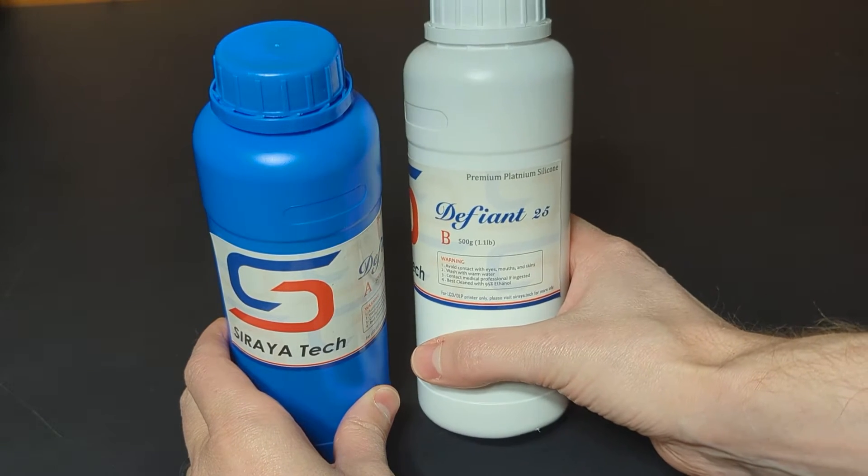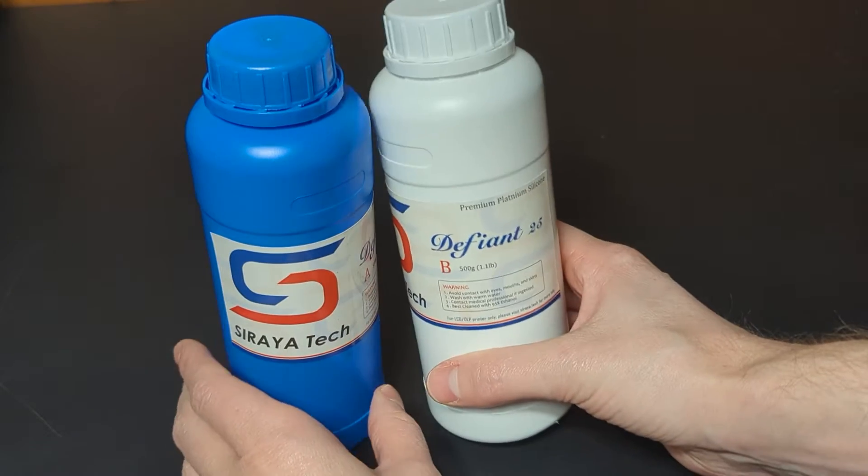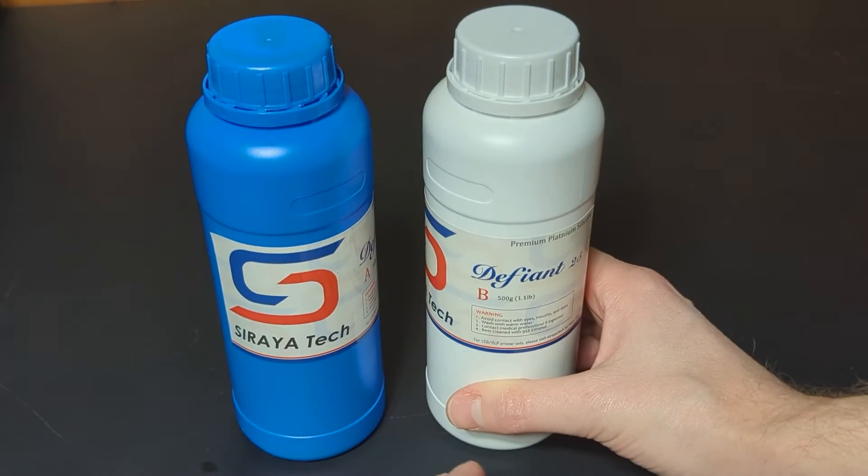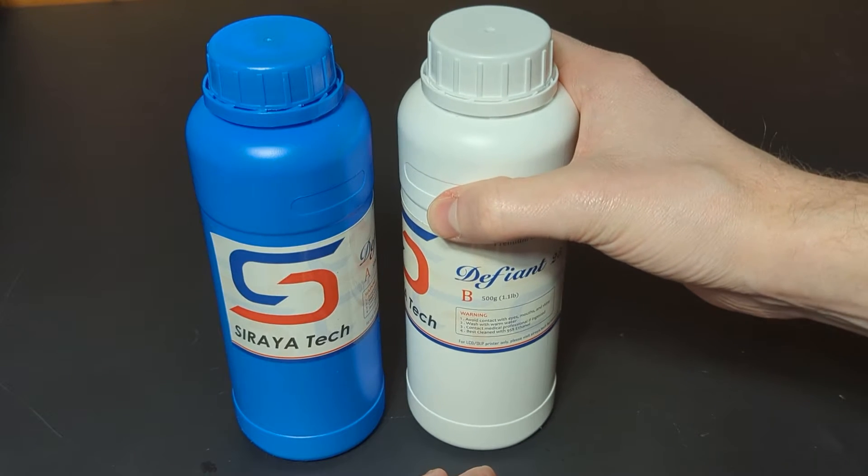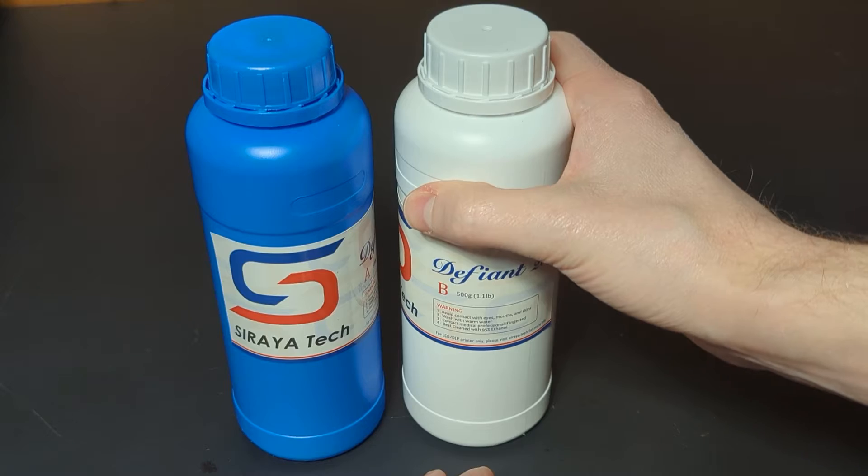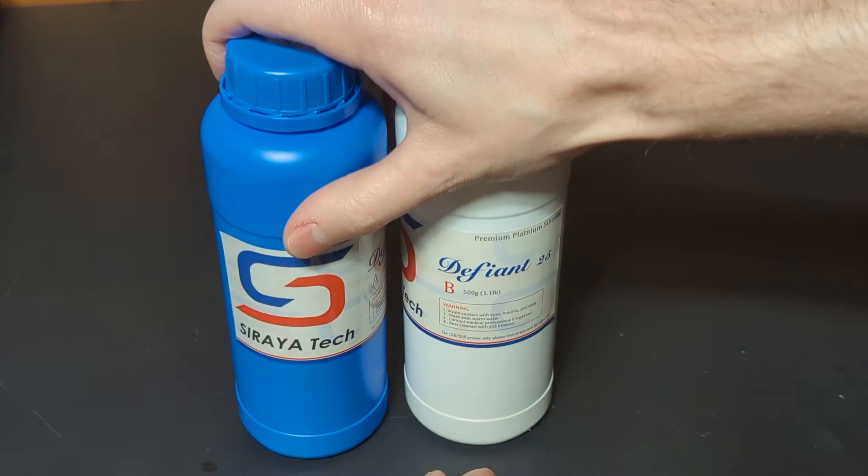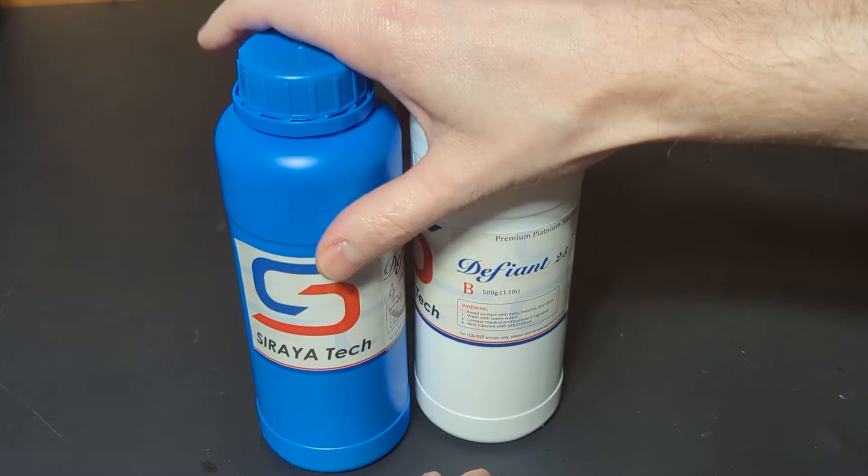And the cool thing about this is it's supposed to be Defiant because it's supposed to be better at making molds of 3D printed parts that are printed in UV resin.